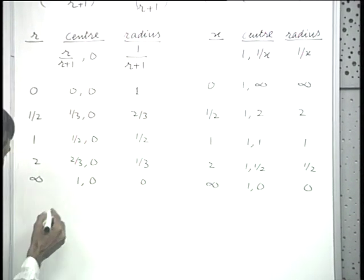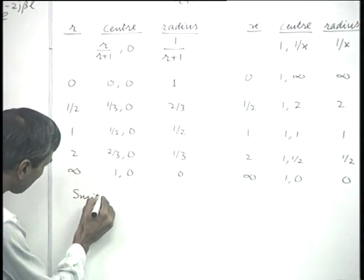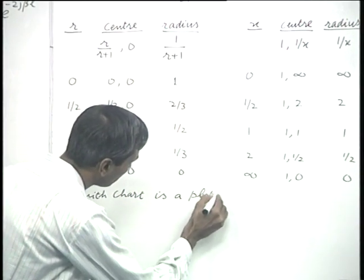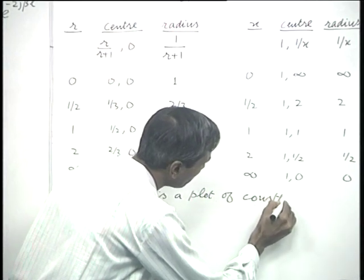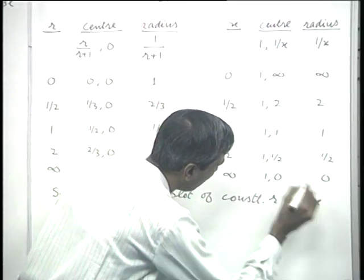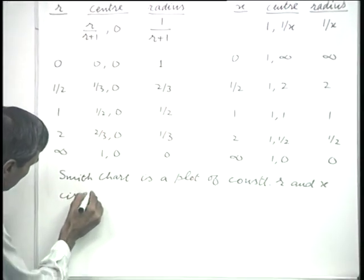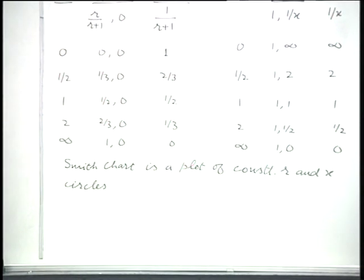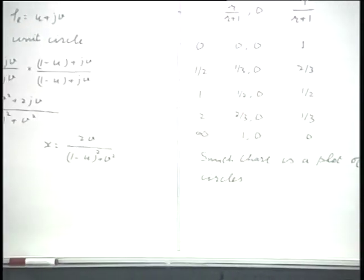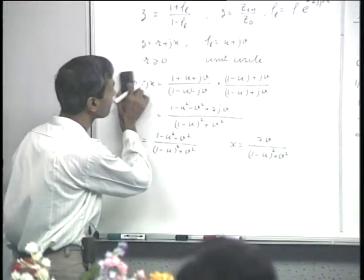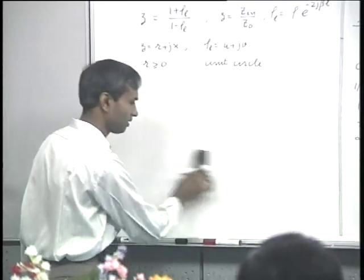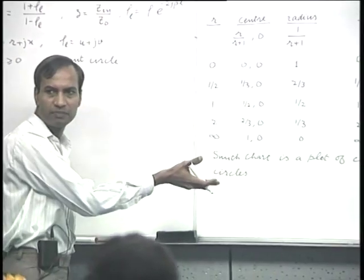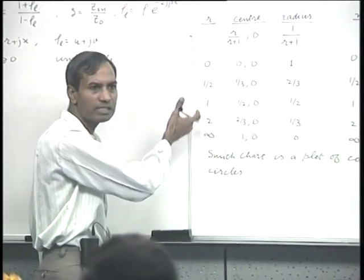When these families of circles are plotted methodically, we get the Smith chart. The Smith chart is a plot of constant resistance and reactance circles in the reflection coefficient plane — that is what a Smith chart is. Before showing this family of circles, we see a simple relationship between the impedance Smith chart and the admittance Smith chart. So far it might appear that the Smith chart is only an impedance chart, since we have been talking about resistance and reactance.